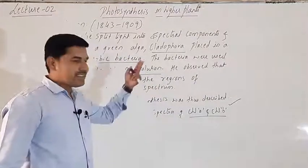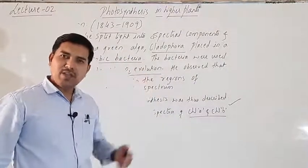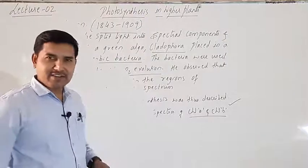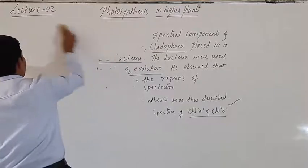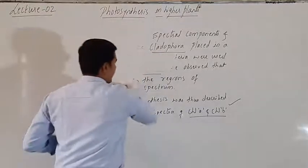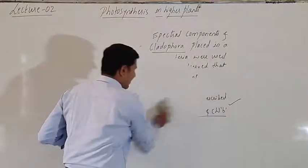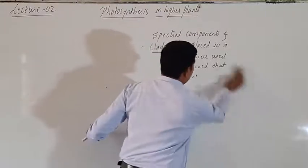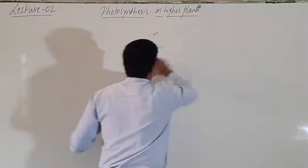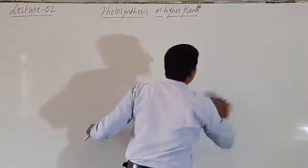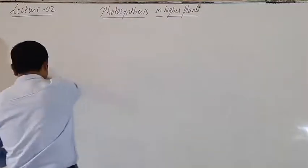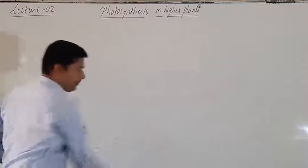Now let us go to the fifth experiment — the last of the early experiments on photosynthesis. To write these characters, just pause the video, rewind it, and write them. The last experiment we are going to study is regarding Cornelis van Neel.